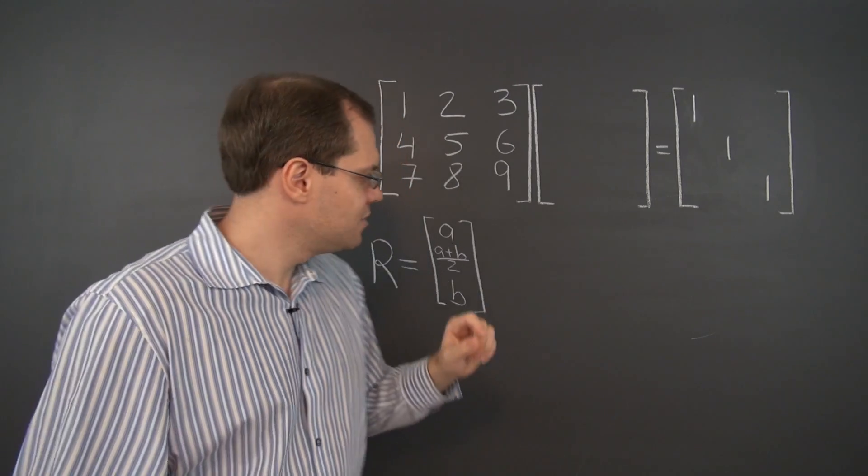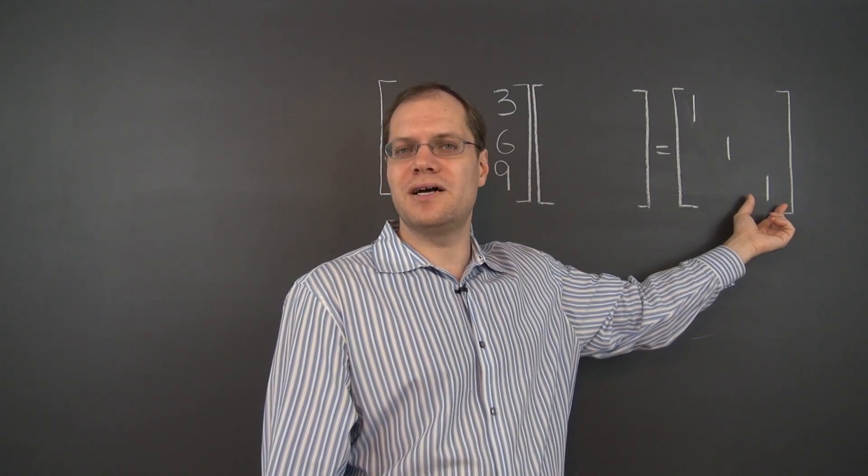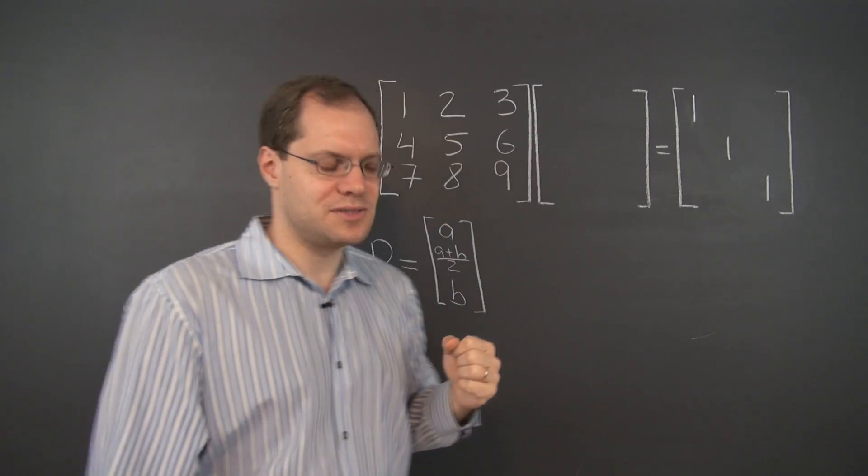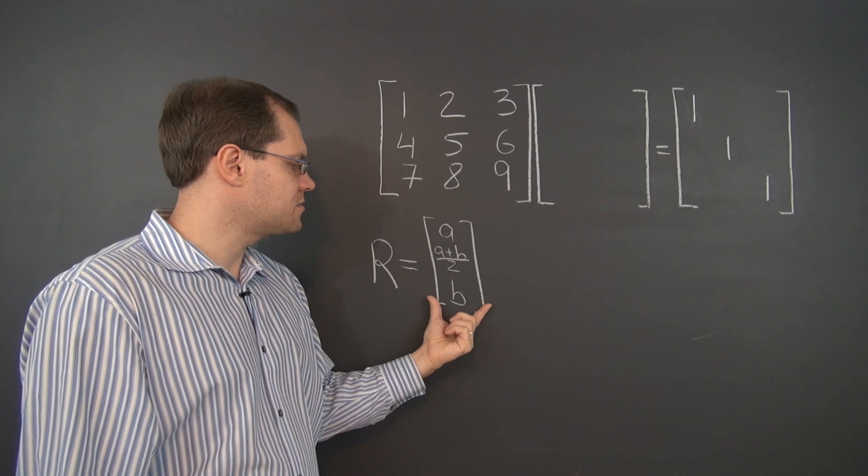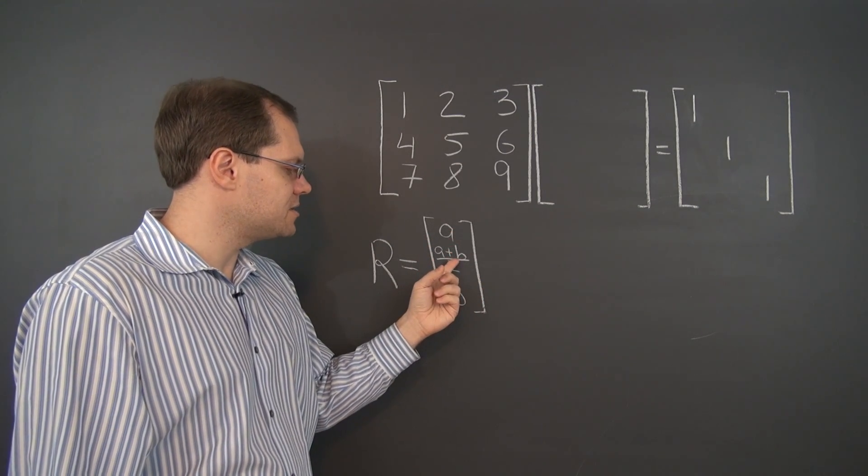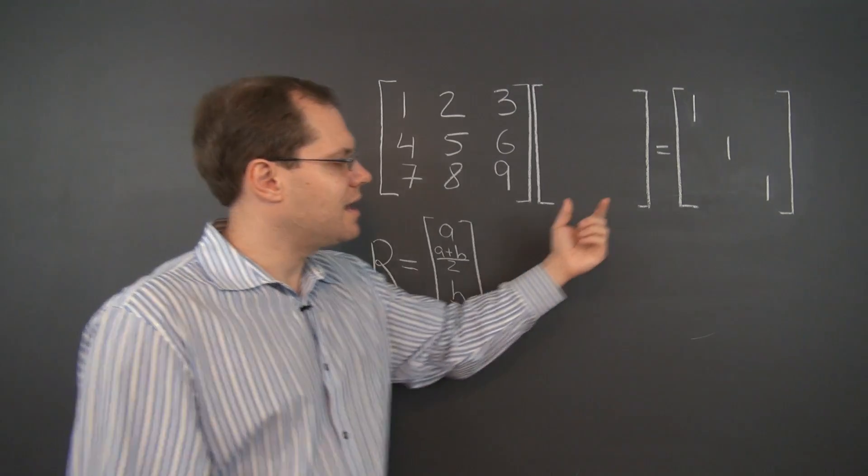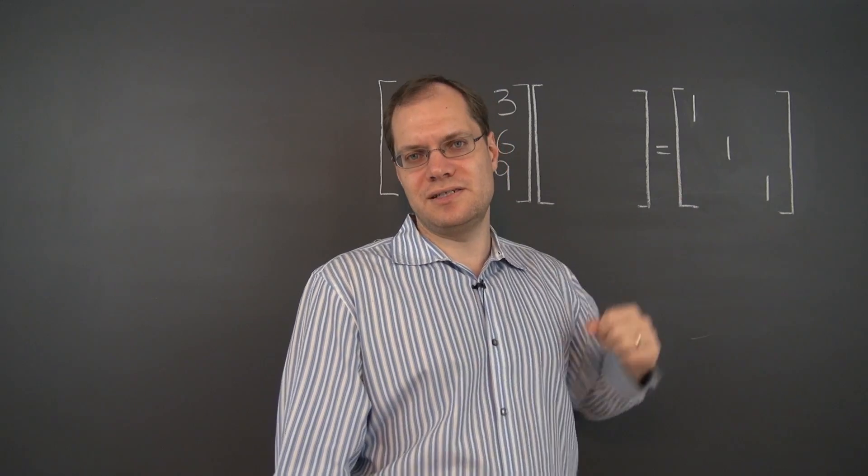In fact, for this particular matrix, we can't even produce any one of these columns. That's because not one of these columns belongs to the column space of this matrix. The column space is characterized by the middle entry being the average of the other two, and that property is not present in any one of these columns.